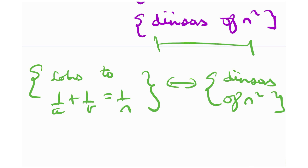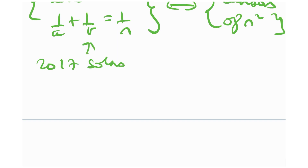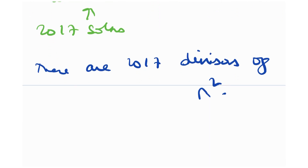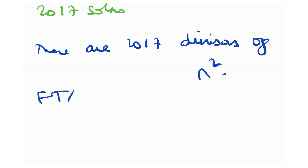Since there are 2017 solutions to 1/a + 1/b = 1/n, and because bijective sets have the same number of elements, there are exactly 2017 divisors of n². Now we use the fundamental theorem of arithmetic to analyze the prime factorization of n².